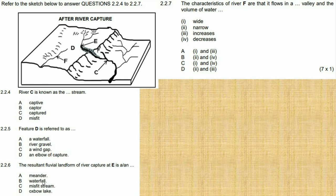And then last question, 2.2.7: The characteristics of river F are that it flows in a valley and the volume of water... So river F, remember now it has less volume of water and it flows within a wider valley.